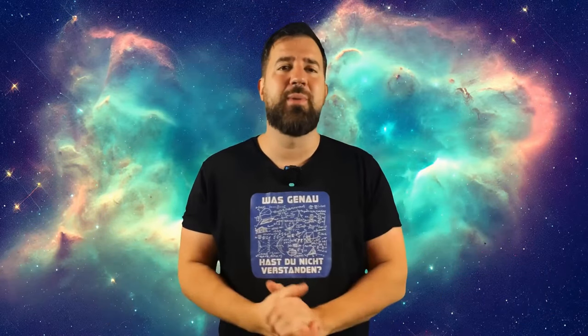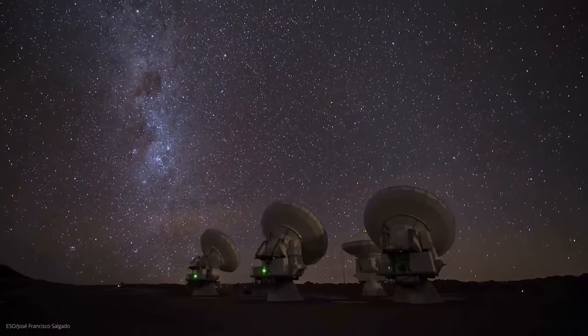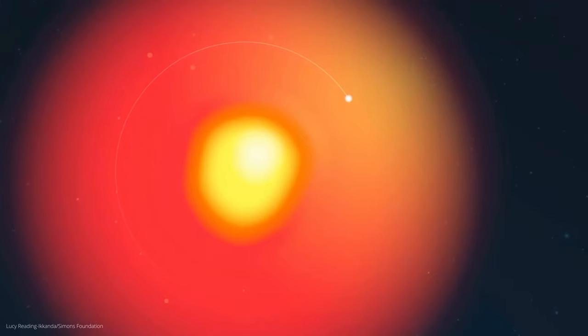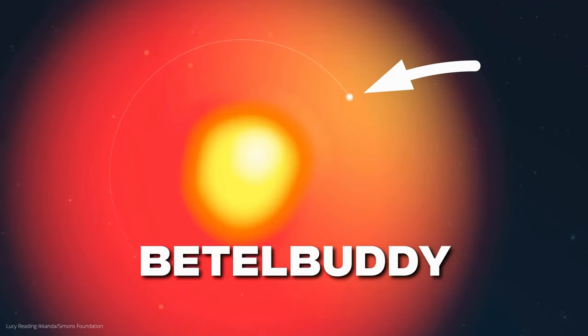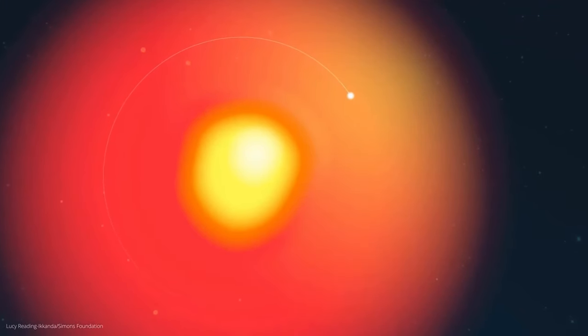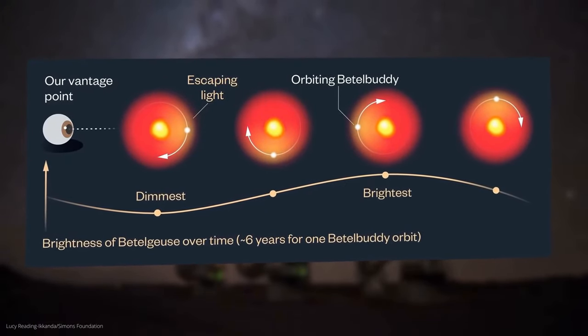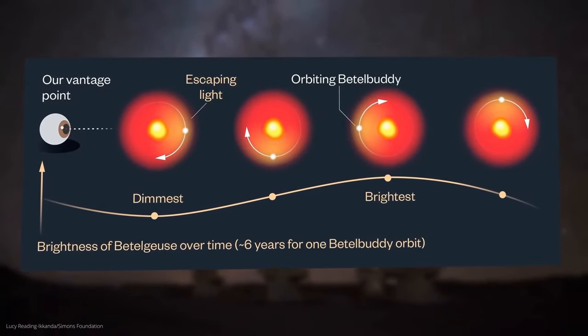An international research team has now found evidence that a second, smaller star is in orbit around Betelgeuse. But this companion star, which the scientists affectionately named Betelbuddy, orbits the main star in exactly the period that also shows the mysterious brightness fluctuations, namely about every 2170 days.